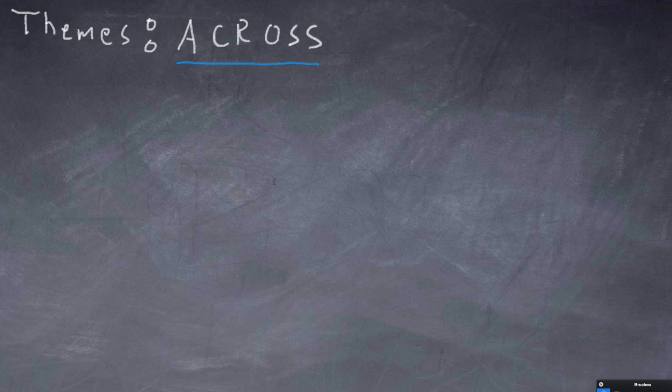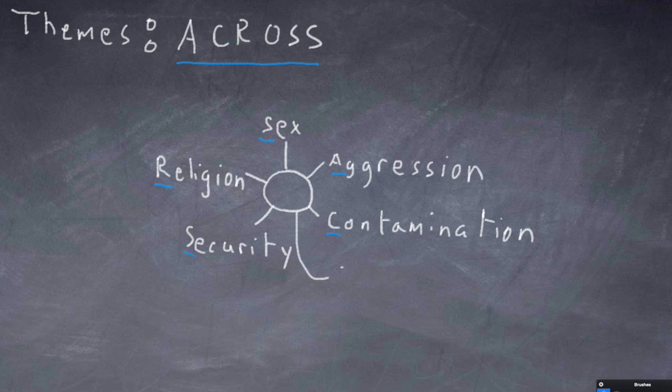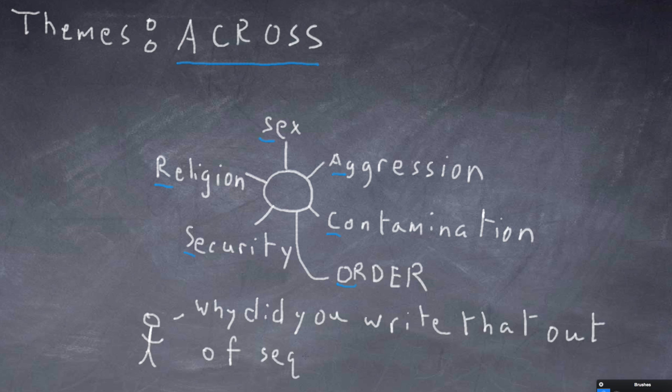Themes are across. So this is aggression, contamination, religion, sex, and security. Oh, and I almost forgot the big one, order. Why did you write that out of sequence?